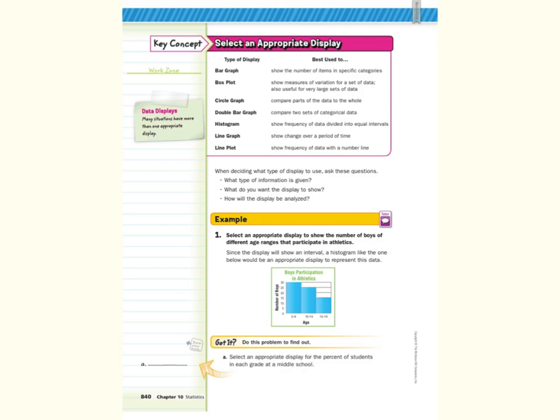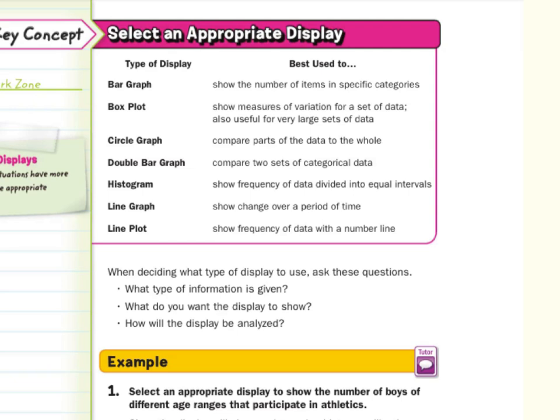And so our key concept today is to select an appropriate display. We're going to use a bar graph to show the number of items in specific categories. A box plot shows measures of variations for a set of data. It's also very useful for large sets of data. We've worked in box plots in the previous lesson where you could see the different quartiles, and you can see the box having 50 percent of the data. So you could see the spread of variation in the centers and things like that. A circle graph is great to compare parts of the data to the whole. When we have our percentages, it's nice to see that in a circle graph.